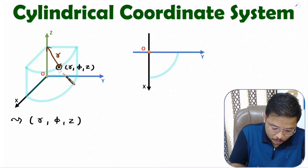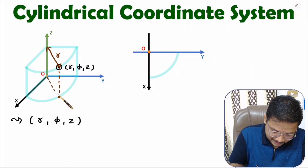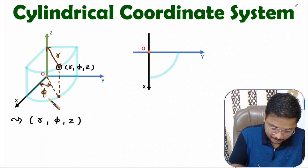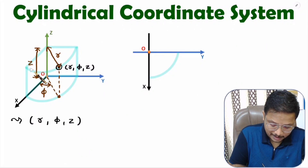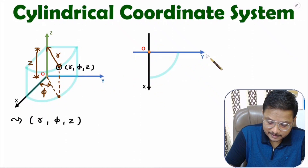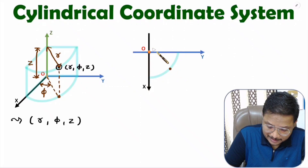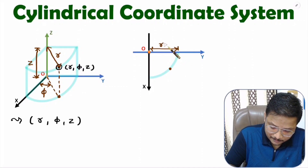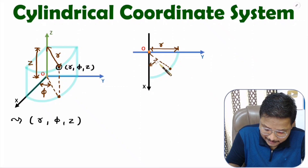To understand phi, you will have to take the projection of this point on the xy plane. Let me take the projection of that point on the xy plane. And if you measure the angle on the xy plane with respect to the x axis, that angle is phi. And z is the length of the cylinder — here we have the cylinder length that is z.